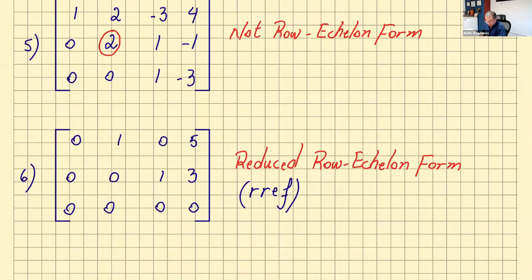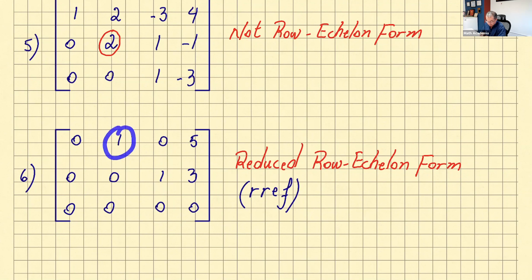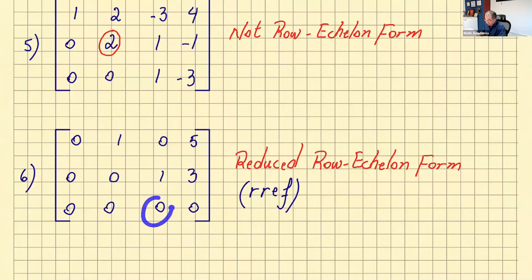Example six: a row entirely of zeros is at the bottom — that works. We have a leading one here and another leading one further right. There is a column of all zeros, but that doesn't prevent it from being row echelon form. Checking RREF: the first leading one has zeros in the other two entries of its column, and the second leading one also has zeros in the other entries. So this is reduced row echelon form — RREF.